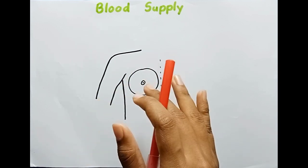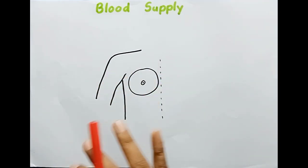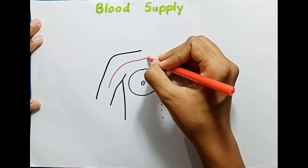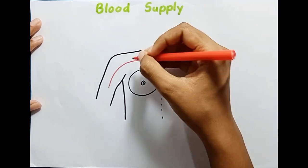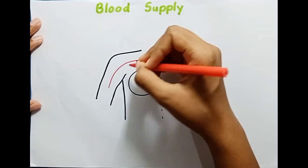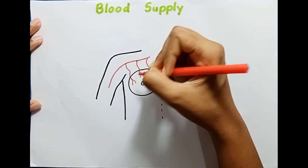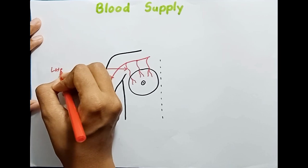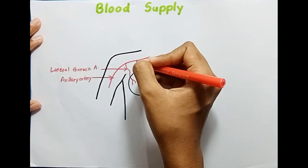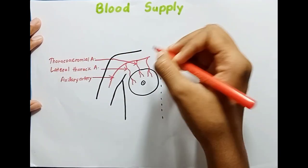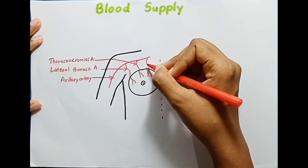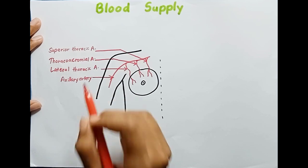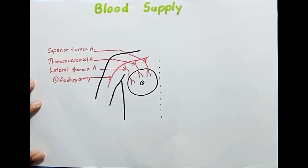Arterial supply is mainly done by branches of the axillary artery, internal thoracic artery, and posterior intercostal arteries. From the axillary artery, you can see the superior thoracic artery, the thoracoacromial artery, and the lateral thoracic artery. These three arteries all arise from the axillary artery.